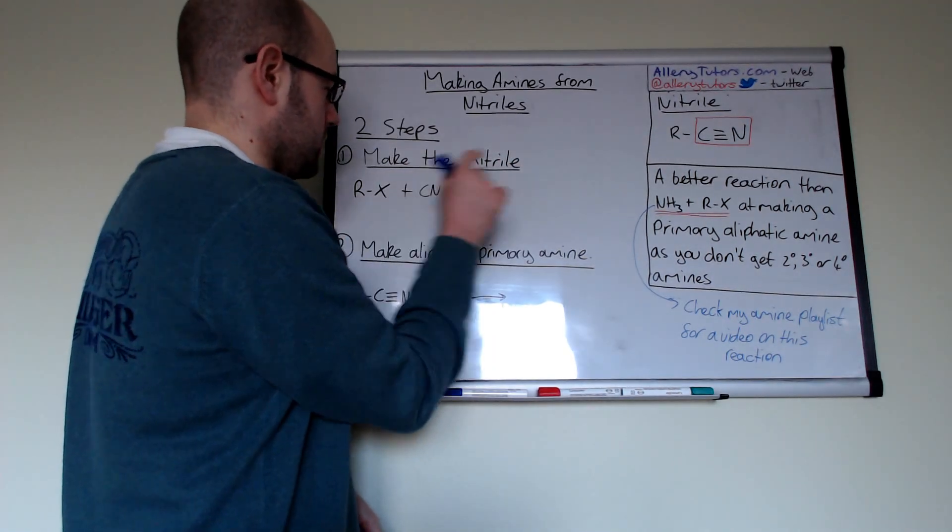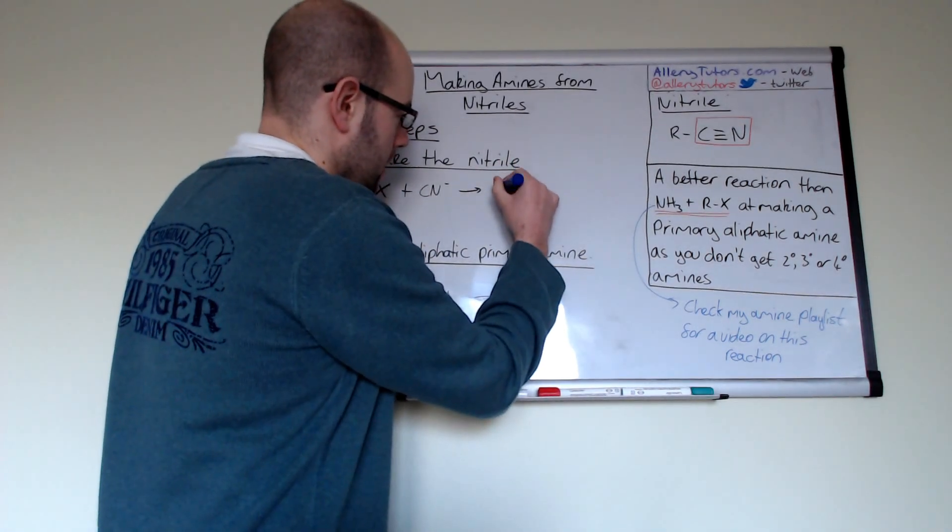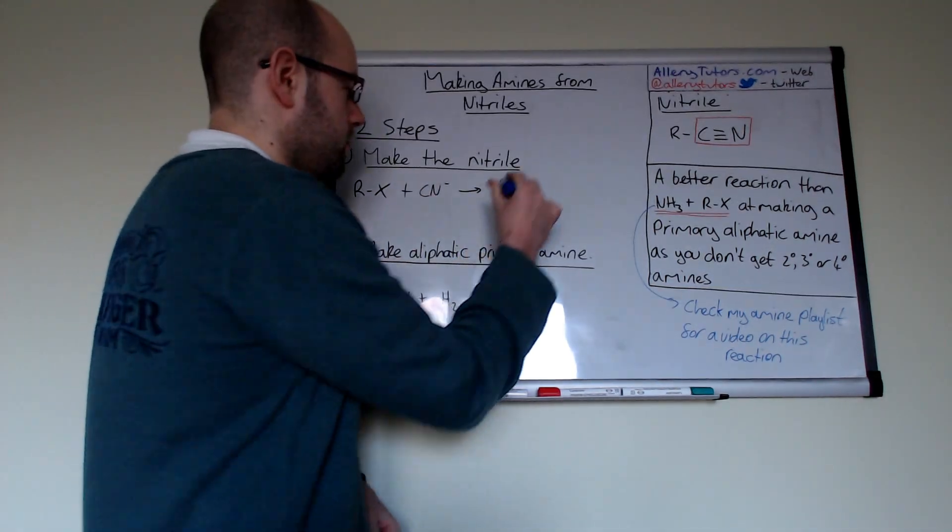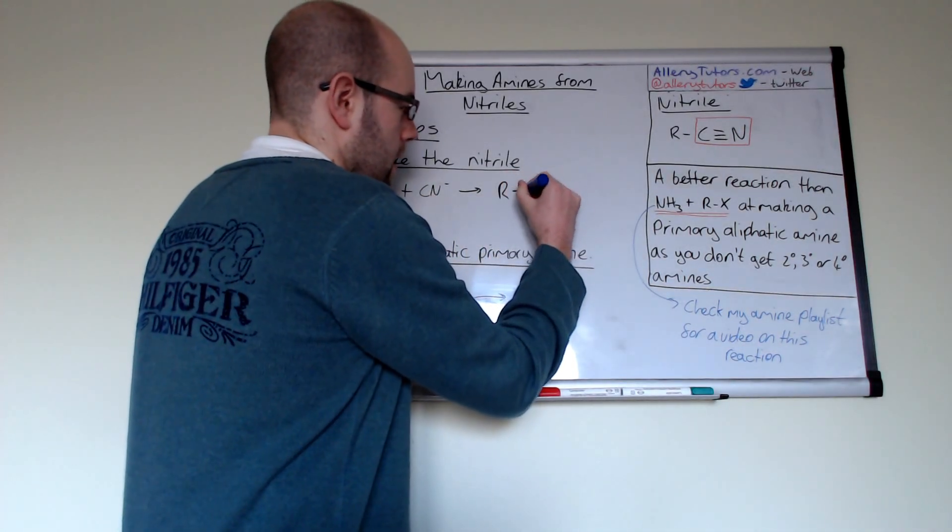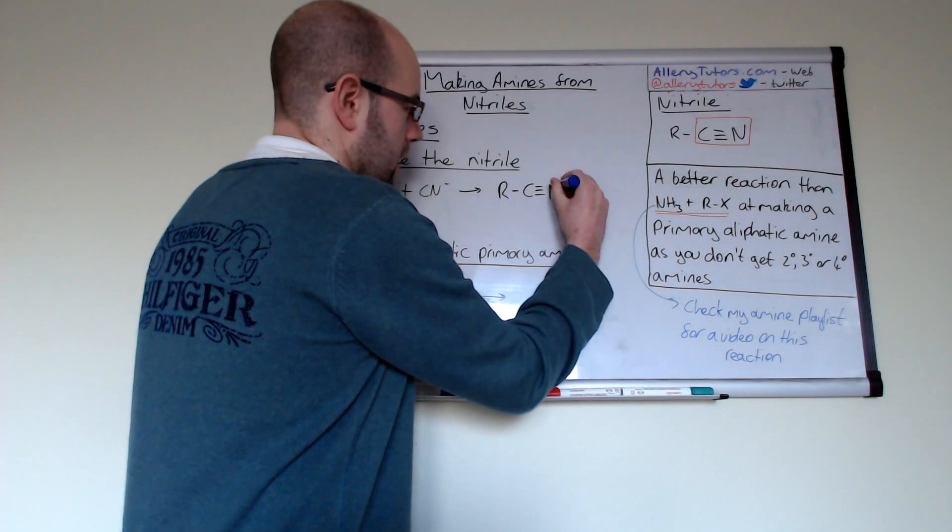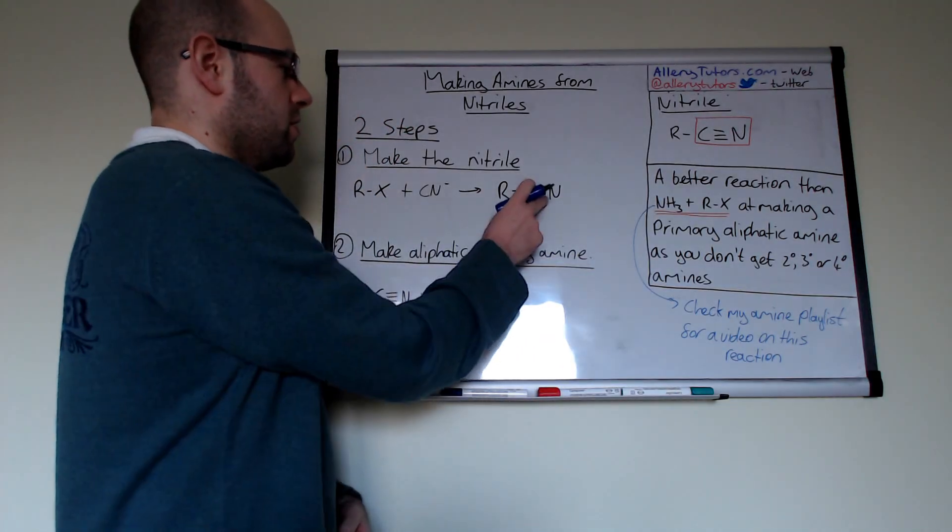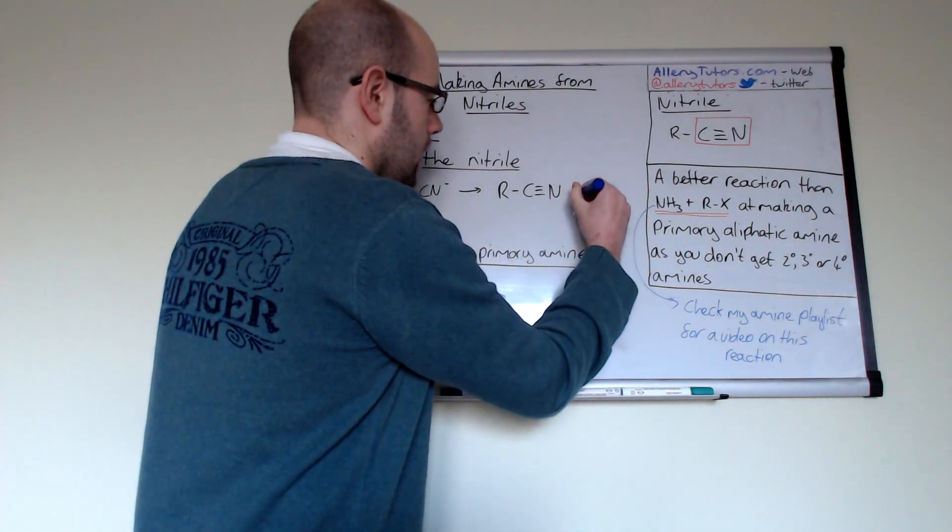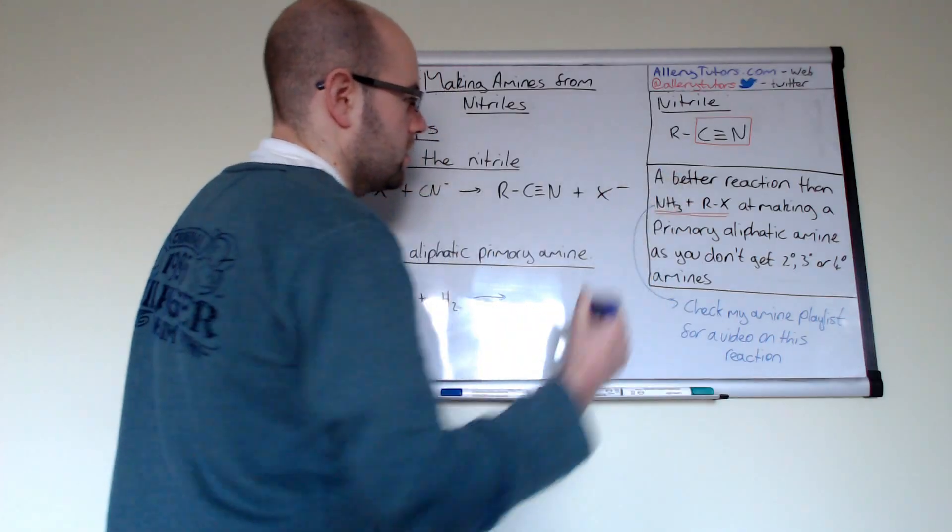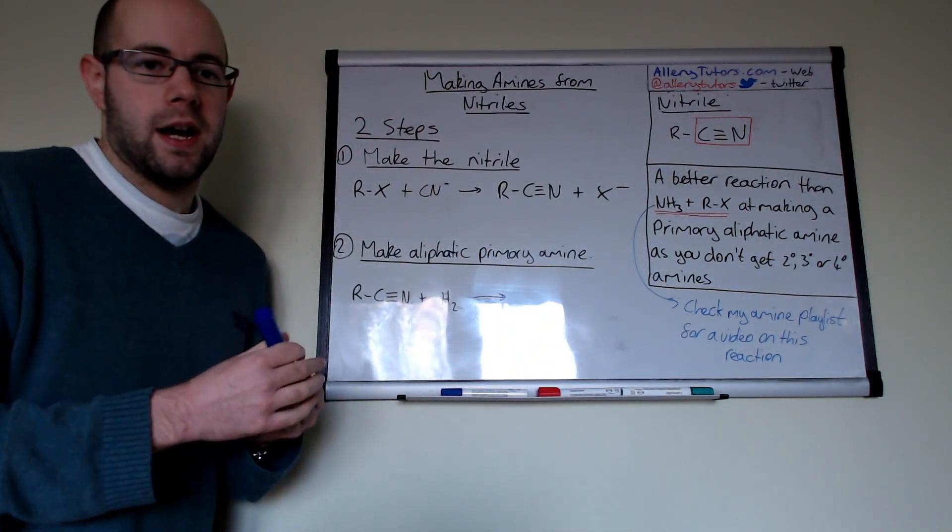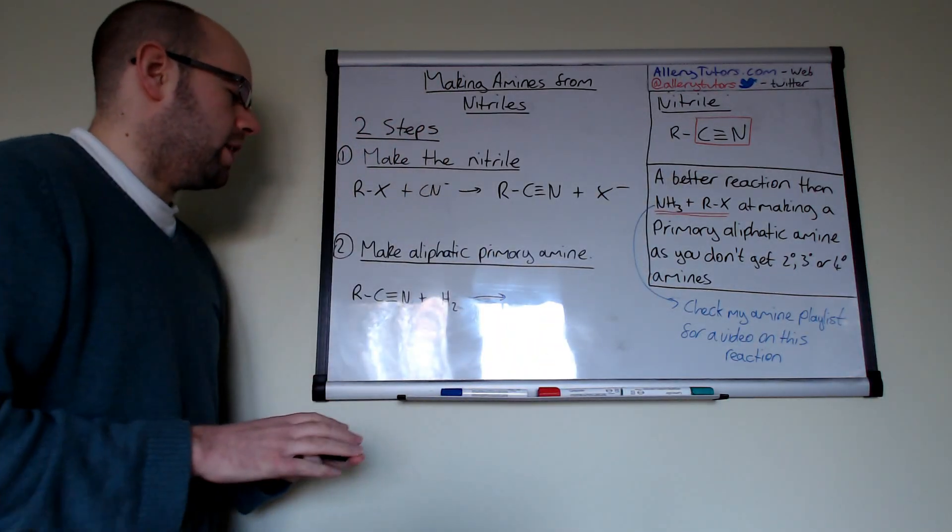So we're going to react Rx with CN and so that's what you have is your R represents a hydrocarbon group that could be attached to it and then you have your nitrile that's produced there so that's RCN, there's your nitrile and obviously you will have your X minus that's your halide ion that's been detached from your halo alkane.